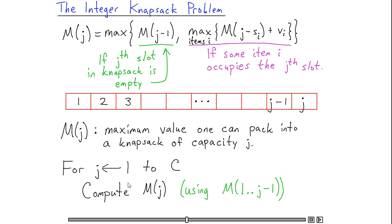The other alternative is that, in the optimal solution, perhaps the jth slot is actually occupied by some item i. In this case, the optimal way to fill a knapsack such that it ends in item i will be to fill first a capacity j minus si knapsack optimally, that corresponds to the M(j-si) in my formula here, and then to just add in the ith item at the end, which corresponds to the vi here. I get the value of the ith item if I do so.